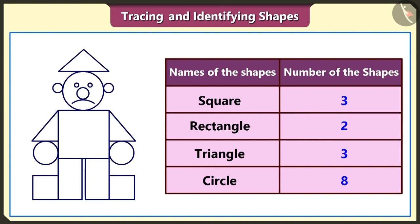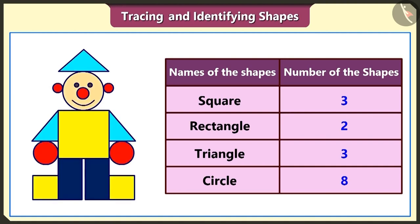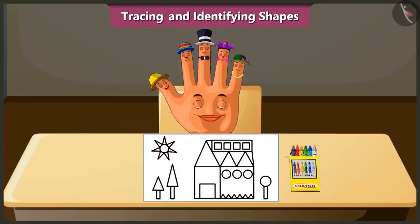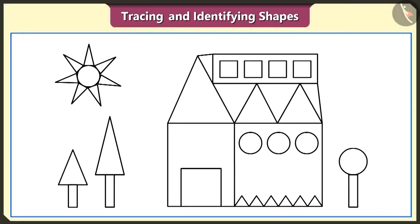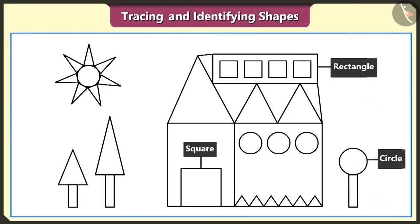But why is he not smiling? Let's fill it with colors. Look, Thumpkin — it is smiling after we filled it with colors. Friends, let's see the second example now. Look, this is a figure made by tracing square, rectangle, circle and triangle shapes.